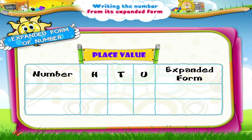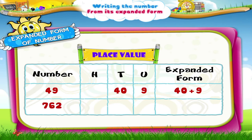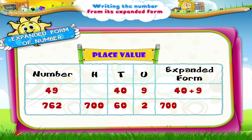49 is written as 40 plus 9. And 762 is written as 700 plus 60 plus 2.